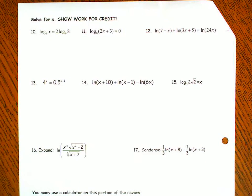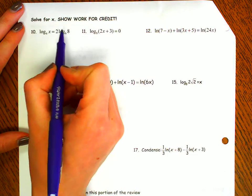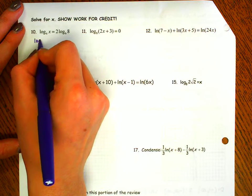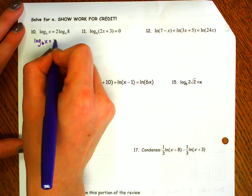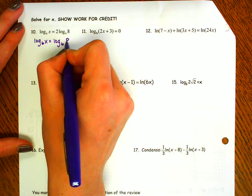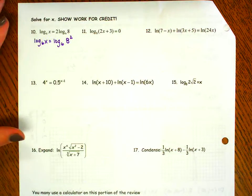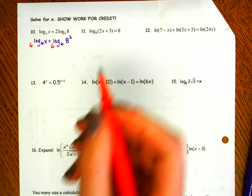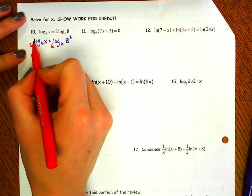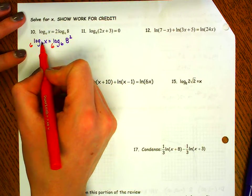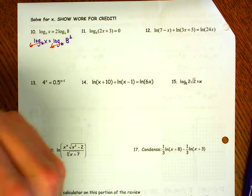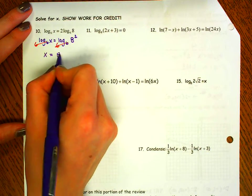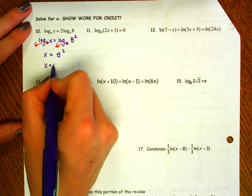So let's start with number 10. It's log base 6 of x equals 2 log base 6 of 8. So the first thing I want to do, this 2 here in the front, I want to move to make it my exponent. So I'm going to have log base 6 of x equals log base 6 of 8 squared. Now the reason I want to do that is now what I can do is do 6 to the, on both sides, and our property says that if you have 6 to the log base 6 or anything to the log base same base, that's going to go away and you're left with just the argument. So I have x equals 8 squared, which leaves me with x equals 64.